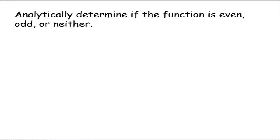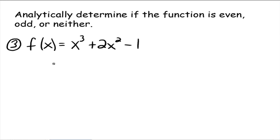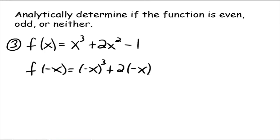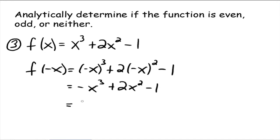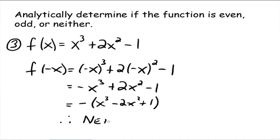One more: f of x equals x cubed plus 2x squared minus 1. Find f of negative x: we get negative x cubed plus 2 times negative x squared minus 1, which simplifies to negative x cubed plus 2x squared minus 1. Is this the same thing we started with? No, because the original has positive x cubed and this has negative x cubed, so f is not even. Then factor out a negative 1 — is the expression in parentheses the same as the original? No, it's not. Therefore this function is not odd either, so it is neither even nor odd.